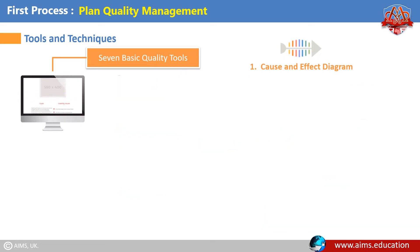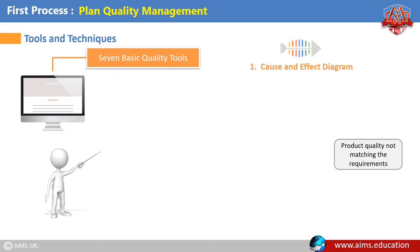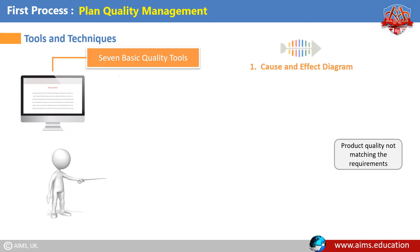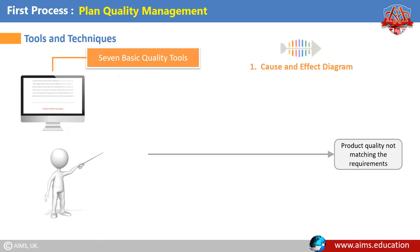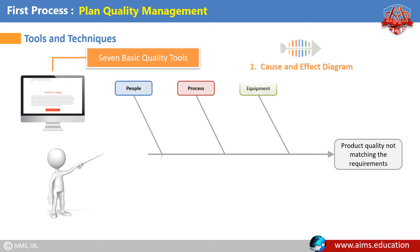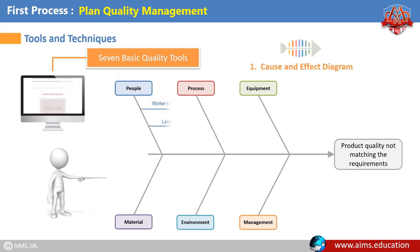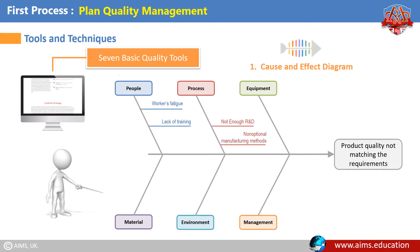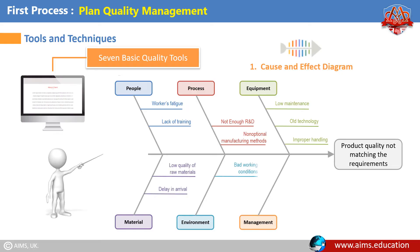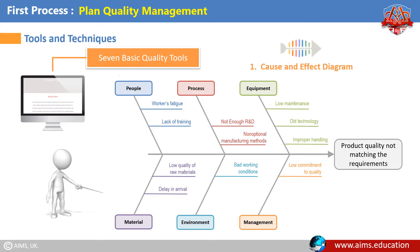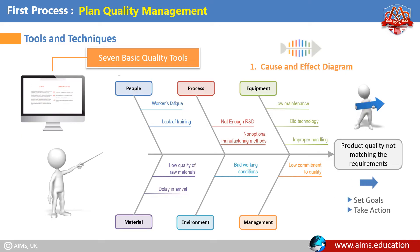First, clearly identify and define the problem or effect for which the causes must be identified. Place the problem or effect at the right, or the head of the diagram. Then identify all the broad areas of the problem, and write the possible causes in each of the broad areas. Each cause identified should now look for more causes. View the diagram and evaluate the main causes, and finally set goals and take action on the main causes.